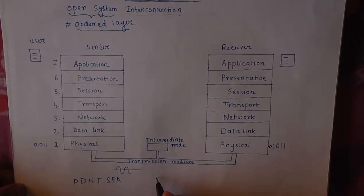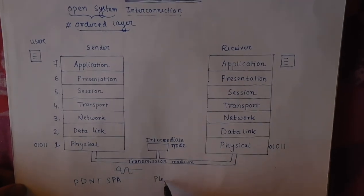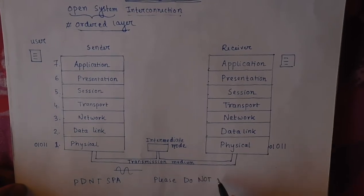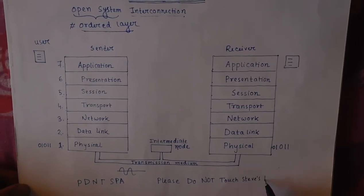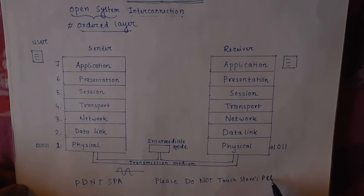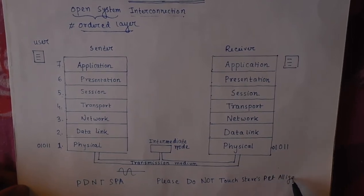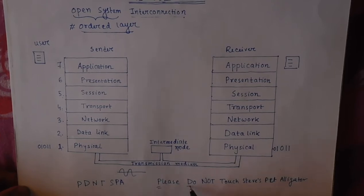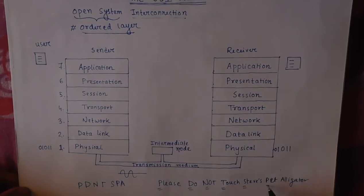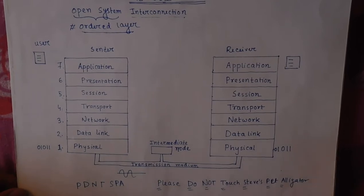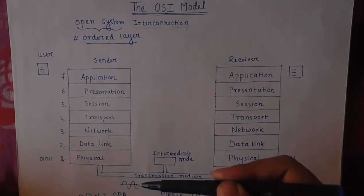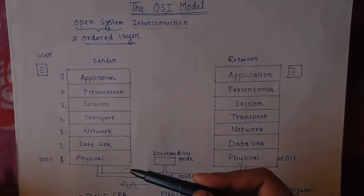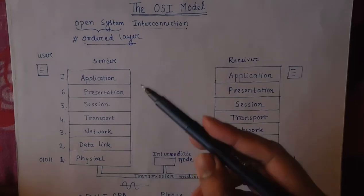You can also remember the sequence by the phrase: 'Please Do Not Touch Steve's Pet Alligator' — that is Physical, Data Link, Network, Transport, Session, Presentation, and Application. In this way we can remember the sequence of the layers.